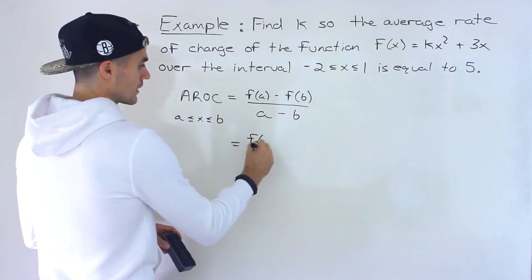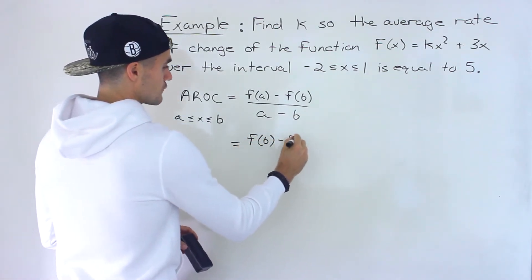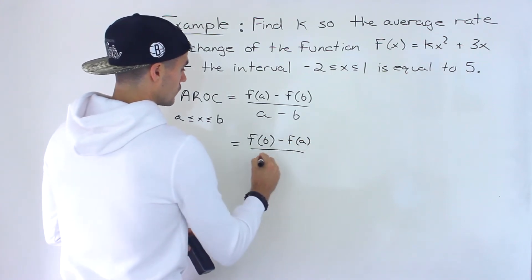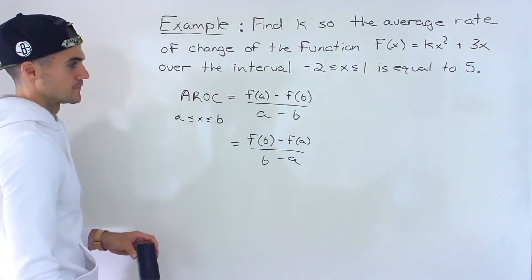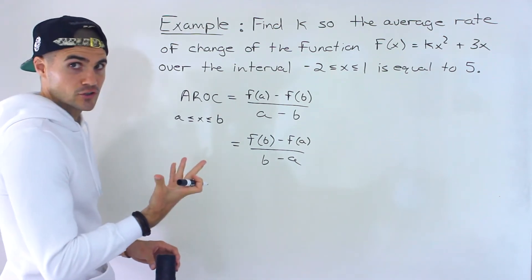Or the other way around, it doesn't matter. You're going to get the same answer: f(b) minus f(a) all over b minus a. That's the average rate of change.